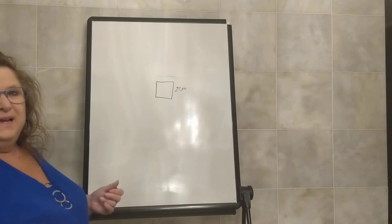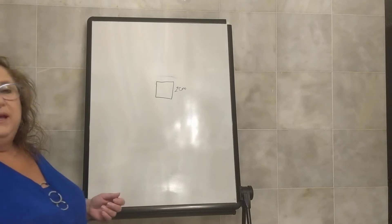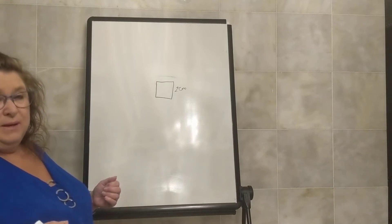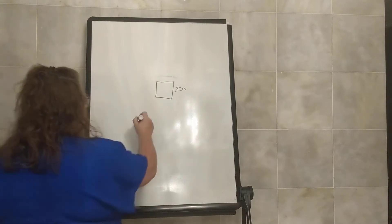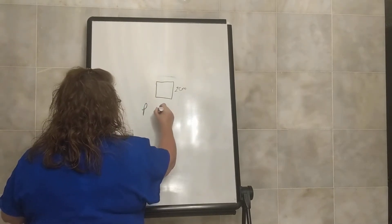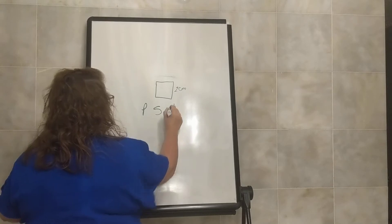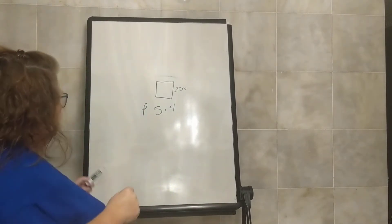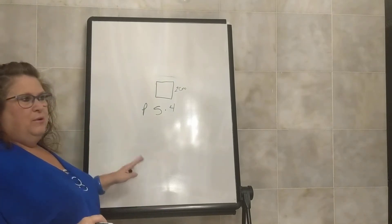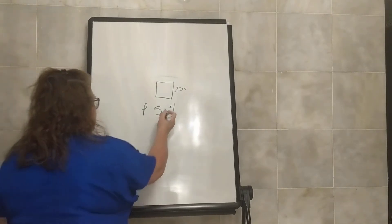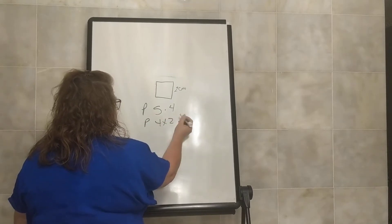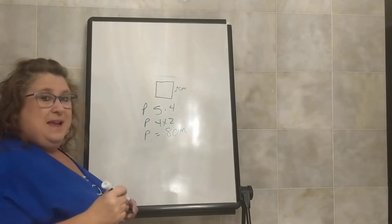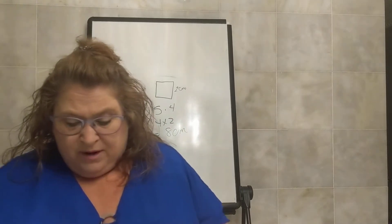If we don't understand multiplication, we can say perimeter of a square equals side plus side plus side plus side. But because we understand multiplication, we are going to use the formula: perimeter equals side times four. So the perimeter is simply perimeter equals four times two, which equals eight centimeters. It is that simple finding the perimeter of a square.